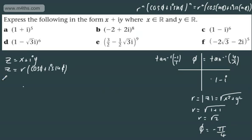So what we can now write is that z is going to be equal to r, which we found to be root 2, cosine of negative pi by 4, plus i sine of negative pi by 4.